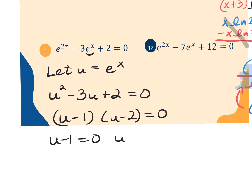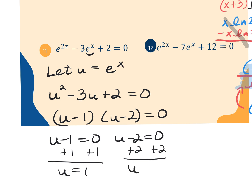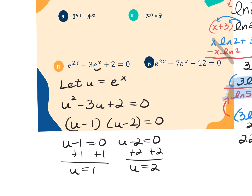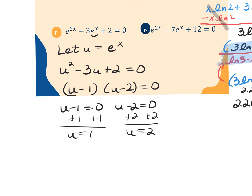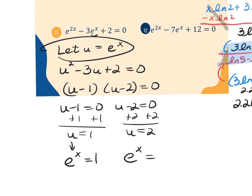Setting each factor equal to zero: U minus 1 equals 0, and U minus 2 equals 0, giving U equals 1 and U equals 2. Remember, the problem wants X, not U. Since U equals E to the X, I substitute back: E to the X equals 1 and E to the X equals 2.